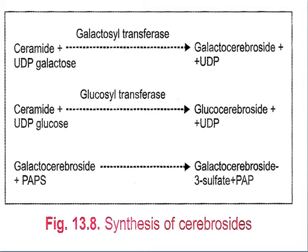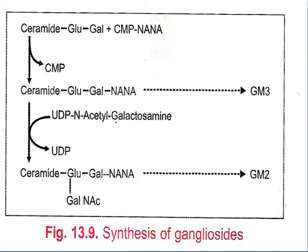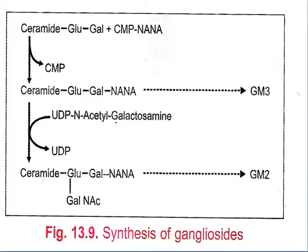Gangliosides are synthesized when ceramide combines with glucose and galactose, plus N-acetylneuraminic acid, to form GM3 (ganglioside M3), and further to GM2 and GM1. These represent the sequential formations of gangliosides.